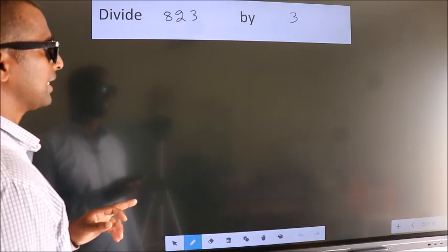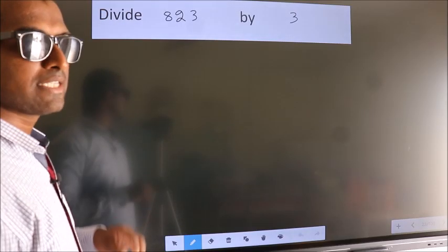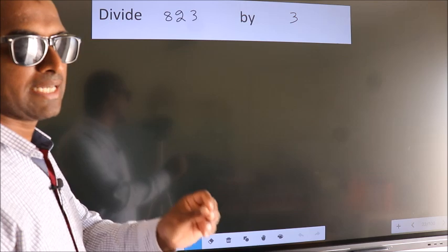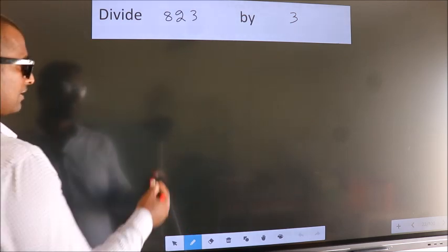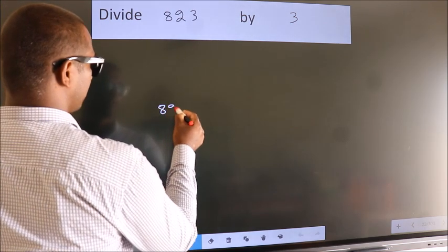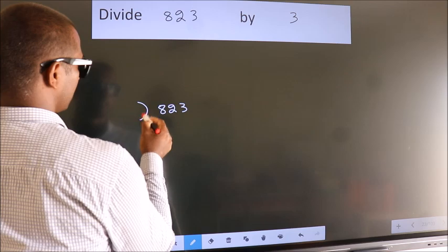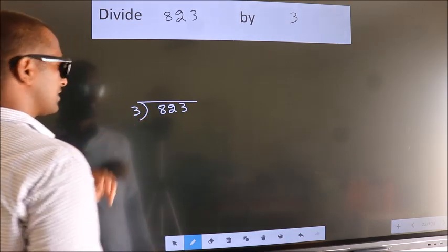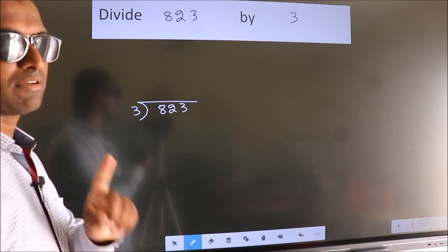Divide 823 by 3. To do this division, we should frame it in this way. 823 here, 3 here. This is your step 1.